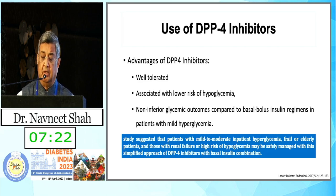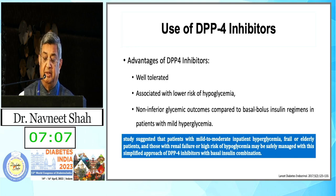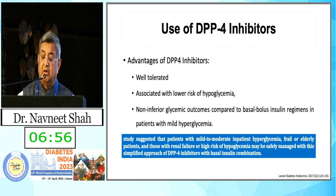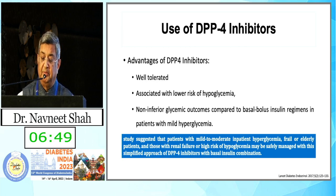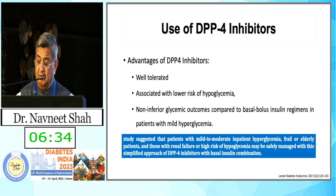The first non-insulin option is DPP-4 inhibitors. They are well tolerated, associated with lower risk of hypoglycemia, and non-inferior in glycemic outcomes compared to basal-bolus regimes in patients with mild hyperglycemia. Studies suggest that patients with mild to moderate inpatient hyperglycemia, frail elderly patients, and those with renal failure or high risk of hypoglycemia may be safely managed with a simplified approach of DPP-4 inhibitors with basal insulin.